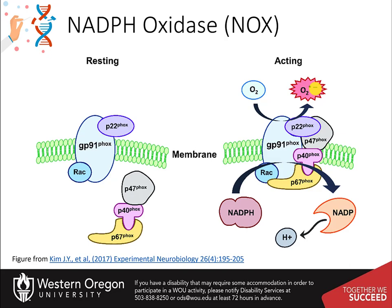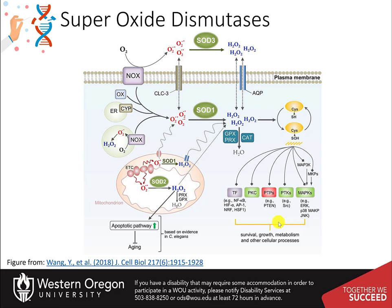NOx thereby serves as an anti-inflammatory mediator. Other enzymes also produce superoxide, including cytosolic xanthine oxidase (XO), the cytochrome P450 monooxygenases (CYP family proteins) in the endoplasmic reticulum, the mitochondrial electron transport chain, and the NADPH oxidase NOx. The key enzyme class used to break down superoxide are the superoxide dismutase enzymes, SOD.